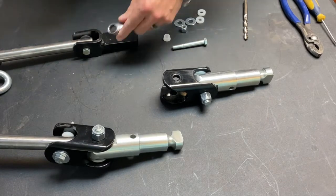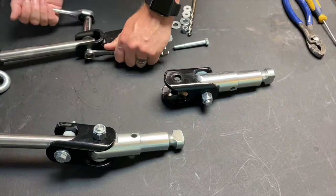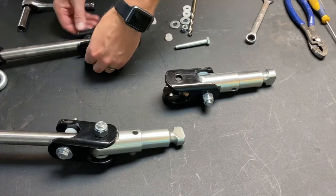Start by removing the classic bar ends by simply loosening and removing the bolt and nut.